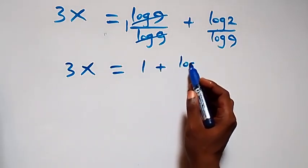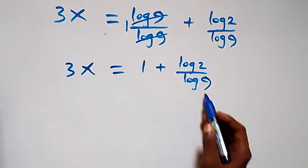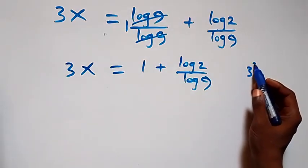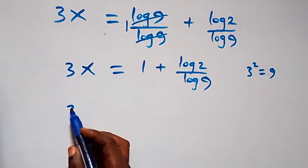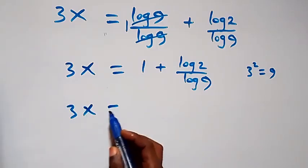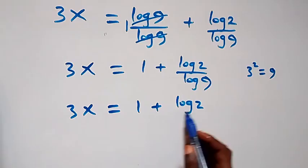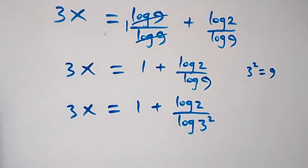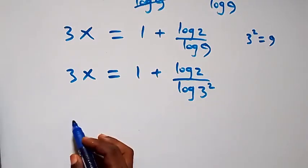And this gives us log 2 over log 9. Also from here we can write 9 as 3 squared. That implies this can be written as 3x equals to 1 plus log 2 over log 3 squared. From here, when we apply the power law as well, the 2 comes down and we have 3x.